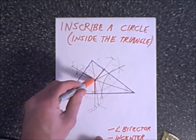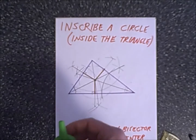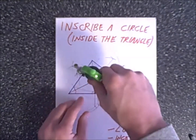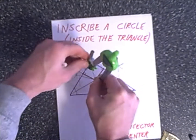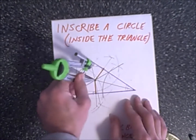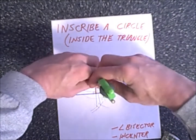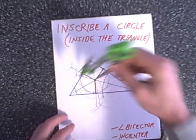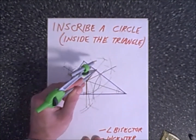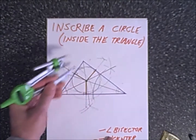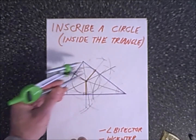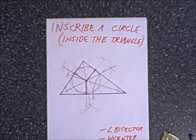Now we just finish up by setting our compass to the same length as each of those three segments — one, two, and three. And now we just draw our circle. There's some sketching here, but hopefully you can see it. So here's our inscribed circle. The way you do it is: bisect each of the angles to form your incenter, then from your incenter draw a perpendicular line segment to each side to create three congruent segments, and these three congruent segments become the radii of your inscribed circle.